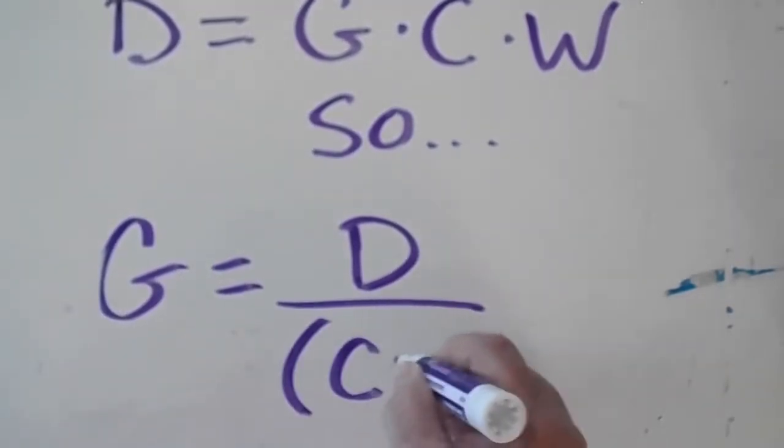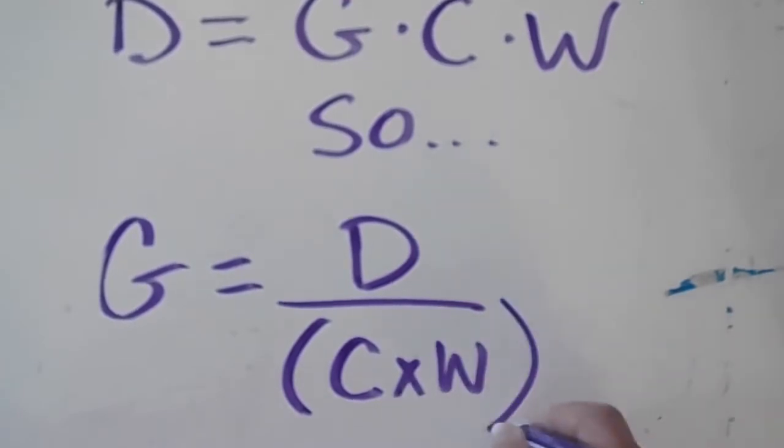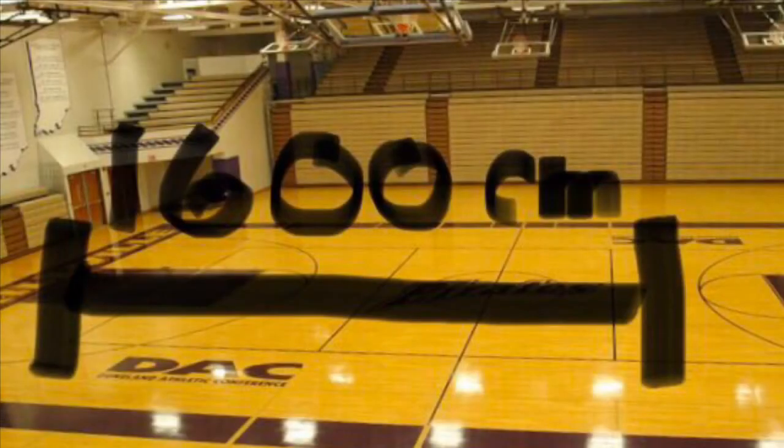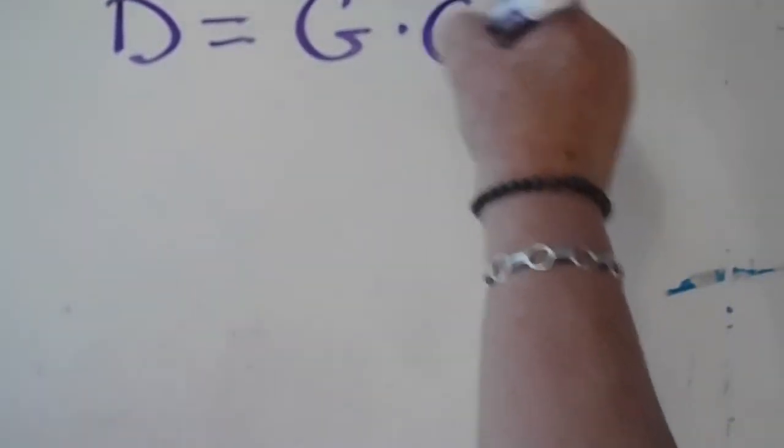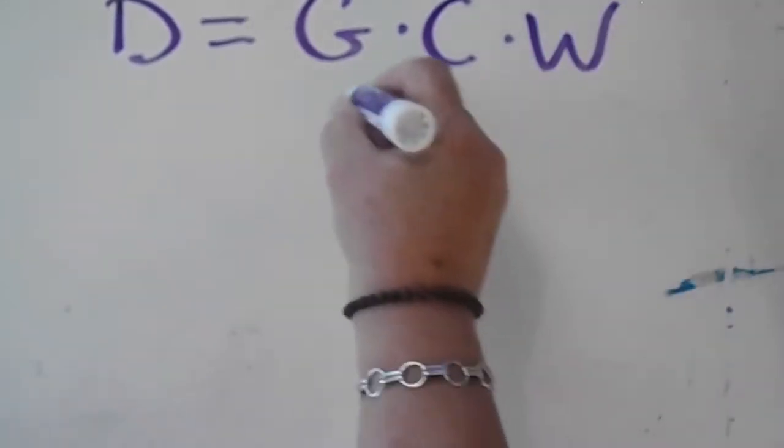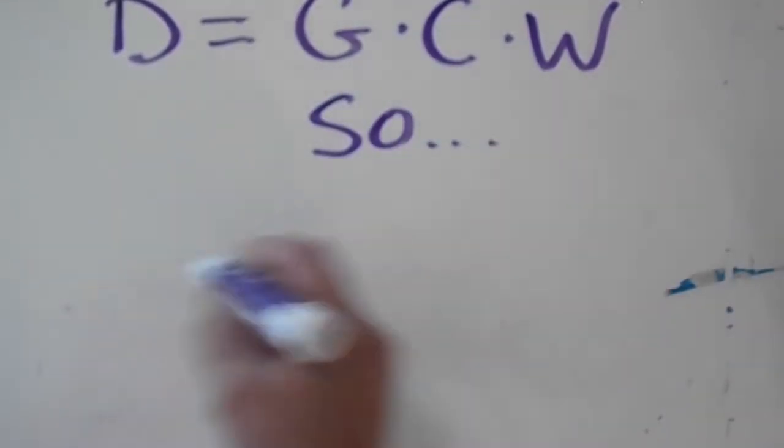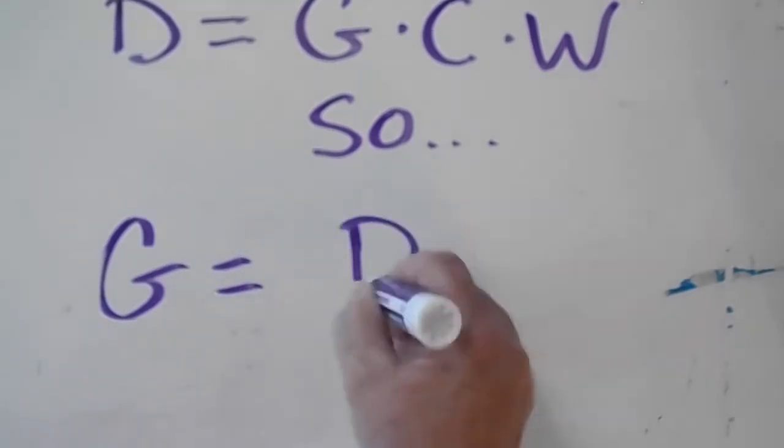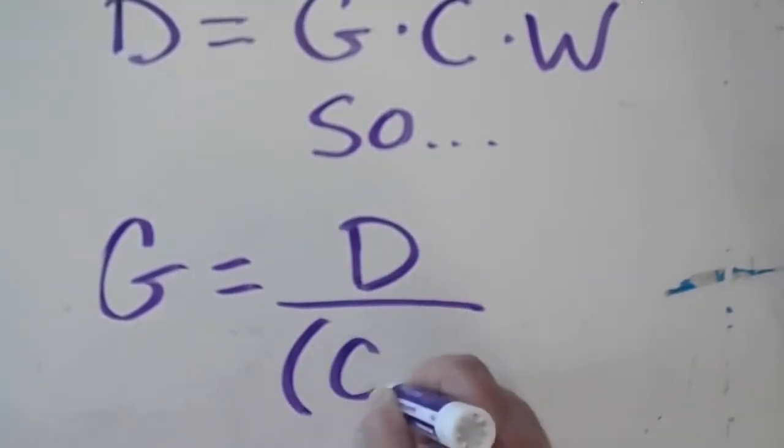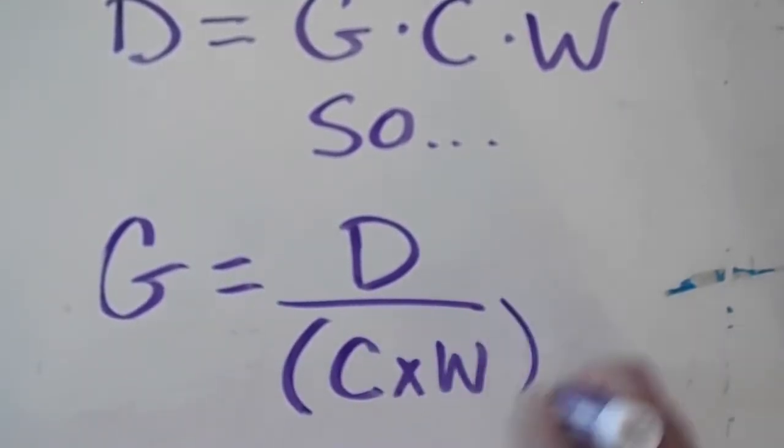This enables us to determine the necessary gear ratio or gear multiplier G for the known factors. The formula then becomes G = D ÷ (C × W). Let's work out an appropriate gear multiplier based on the variables. Suppose we want the mousetrap car to travel about two-thirds the length of a standard basketball court, which is about 1600 centimeters.